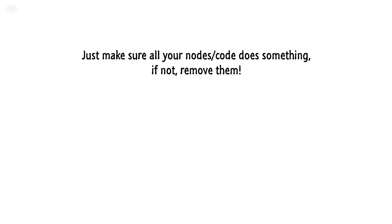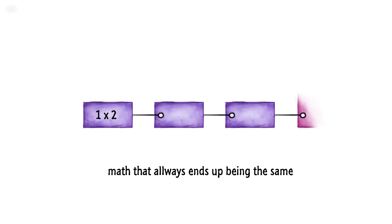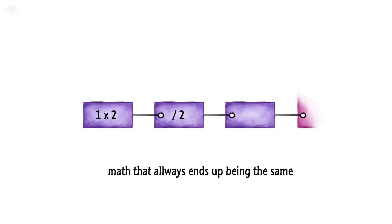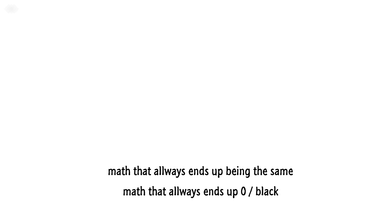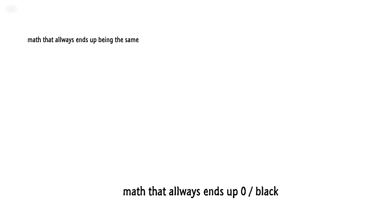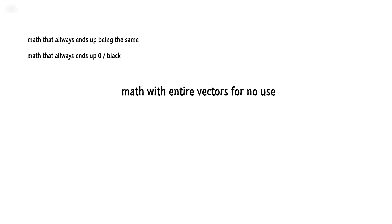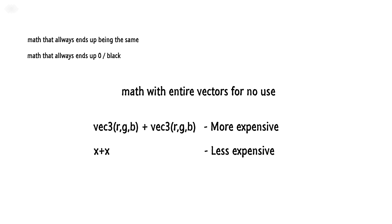Remove unnecessary stuff. It is really as easy as it sounds — just make sure all your nodes are doing something. Math that always ends up being the same result should be a simple constant or removed altogether. It's very common to find a large chain of many nodes that in the end always result in the same output. Math that ends up always being zero should not be there. Also watch for math with entire vectors used for no purpose — doing a vector3 plus vector3 is three times more expensive than a single value plus a single value. Make sure you use all channels in your math, or redo the math so it only affects the values you're actually using.